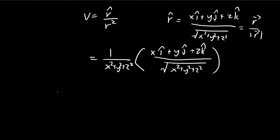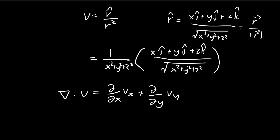For the formula for divergence, we know that it's equal to the partial derivative of the x component plus the partial derivative of the y component plus the partial derivative of the z component. You can see that the x, y, z components are pretty symmetrical — they all share the same denominator. For the x component, we have x in the numerator; for the y component, y in the numerator; and for the z component, z in the numerator.